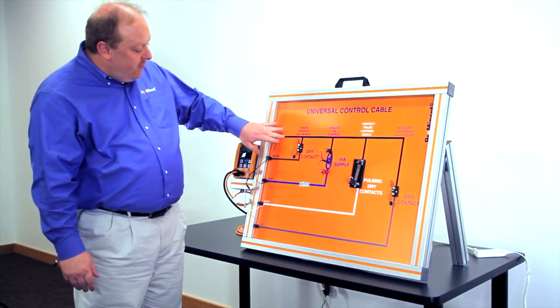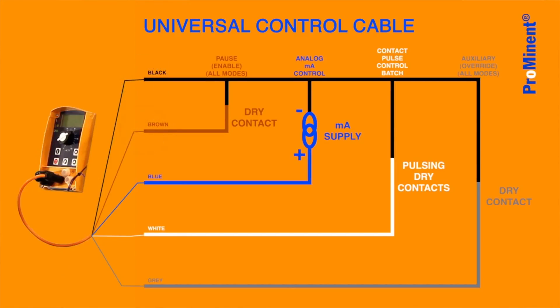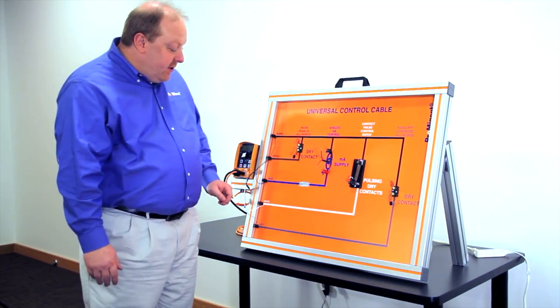The universal control cable has five wires: a black, a brown, a blue, a white, and a gray. We're going to go over the functions for each of those.